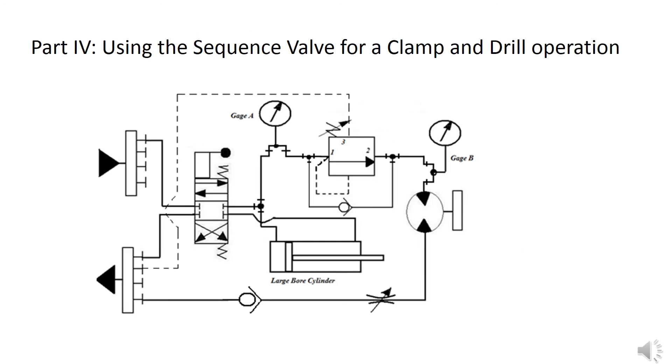Part four appears on page 124, and it's similar to the one on 122. In this case, the sequence valve is going to be used to prevent a motor from turning until a cylinder is fully extended. So, on startup, the valve has been set. The cylinder will extend and deadhead. After it deadheads, then the sequence valve will open up and allow the motor to turn.